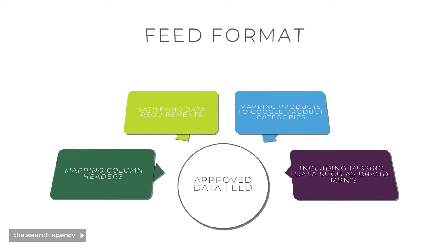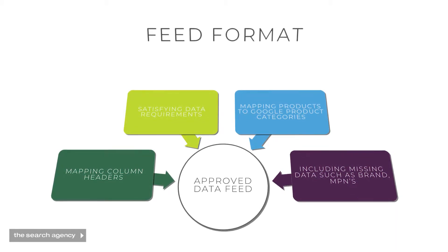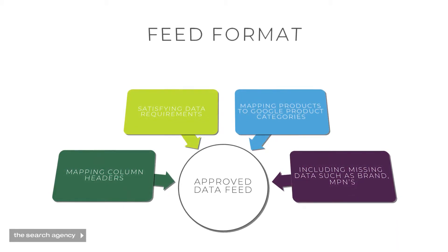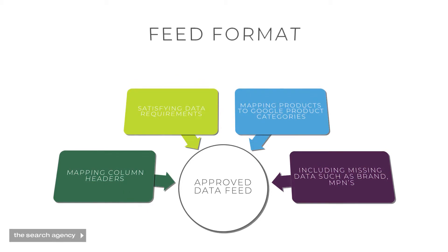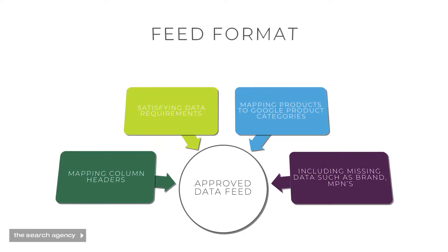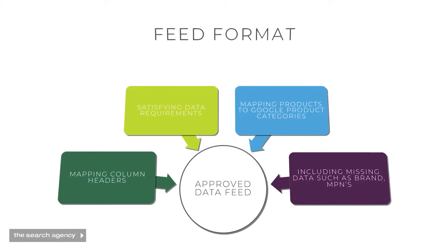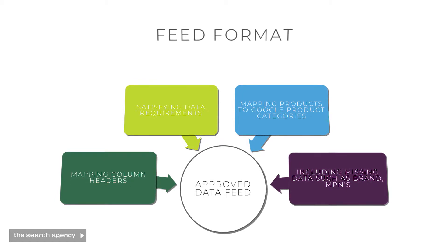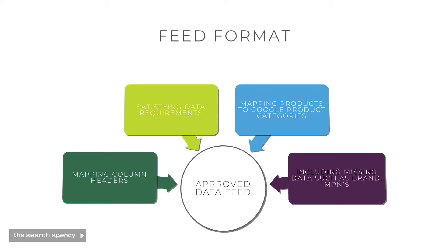After you have your client's data feed, odds are you're going to have to make some edits to it. These edits include making sure that the column headers are labeled correctly, that your product titles are within the character limits, and that your products are matched to the nearest Google product category and contain other fields like brand and model number. If any of these categories are missed, as well as several other feed specifications you can check on Google's website, your product feed will be disapproved.